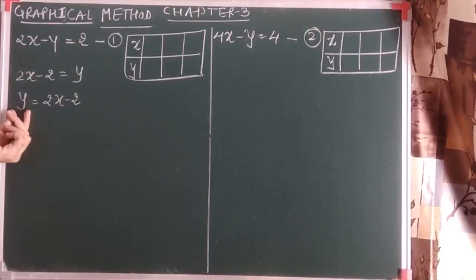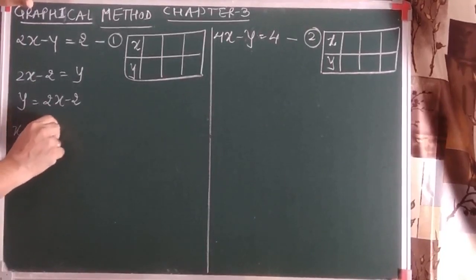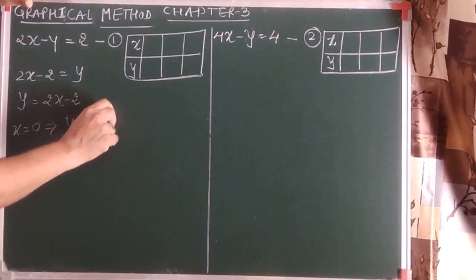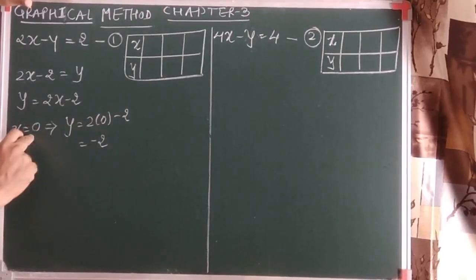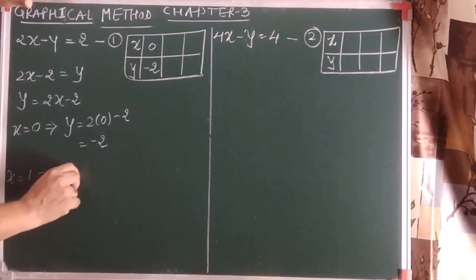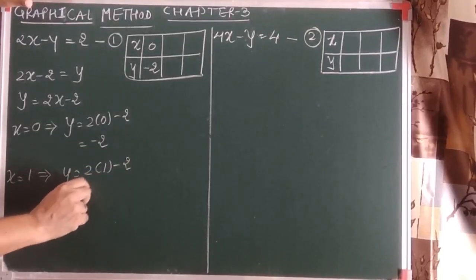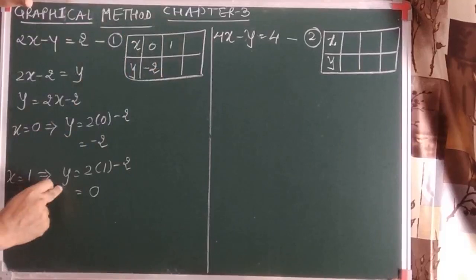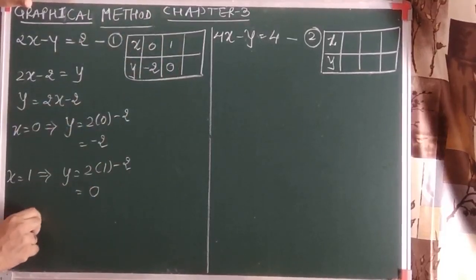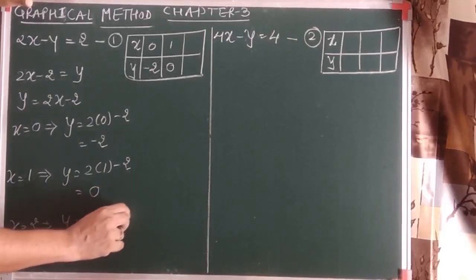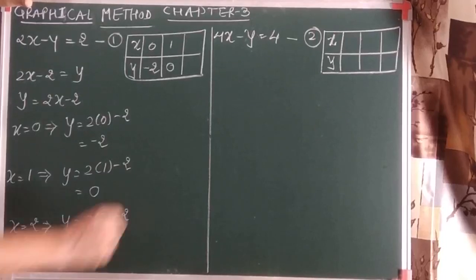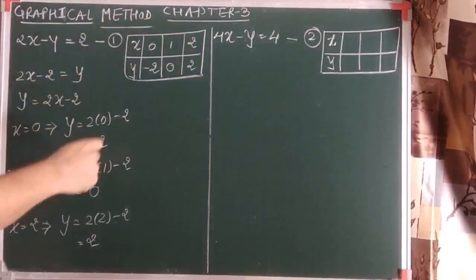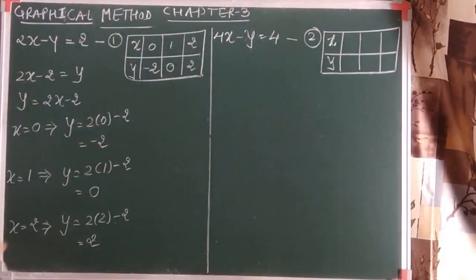We will always remember that the term we make the subject should be positive. For x equals 0, y equals 2 into 0 minus 2, which is minus 2. For x equals 1, y equals 2 into 1 minus 2, so 2 minus 2 equals 0. For x equals 2, y equals 2 into 2 minus 2, so 4 minus 2 equals 2. So we obtain three solutions: (0, −2), (1, 0), and (2, 2).